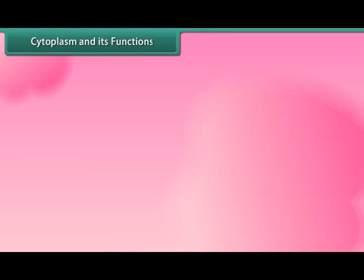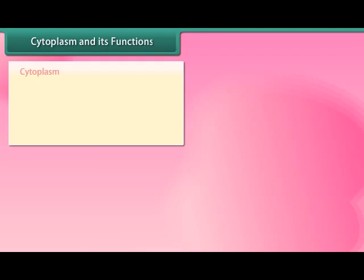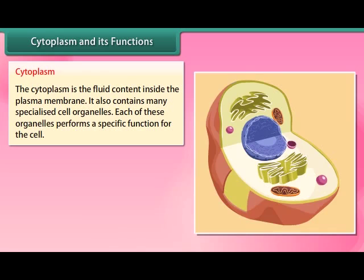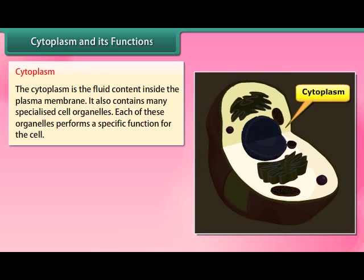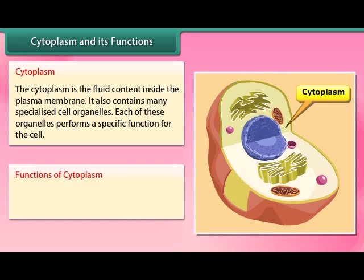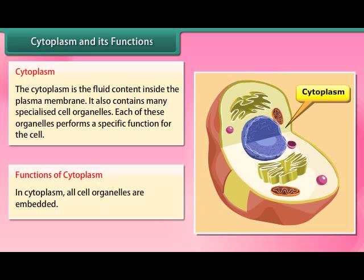The cytoplasm is the fluid content inside the plasma membrane. It also contains many specialized cell organelles, each of which performs a specific function for the cell. All cell organelles are embedded in the cytoplasm.